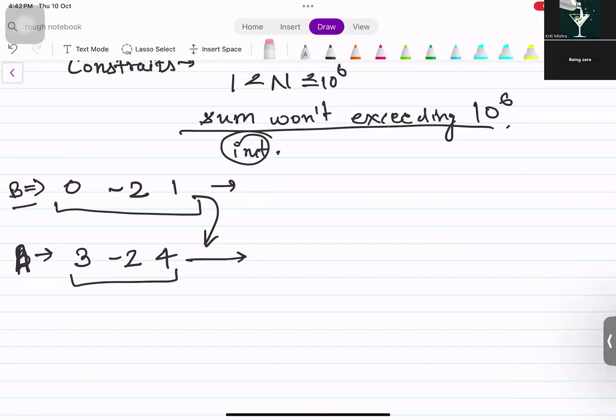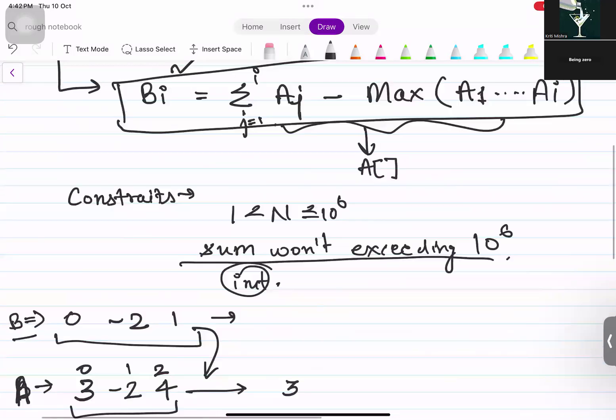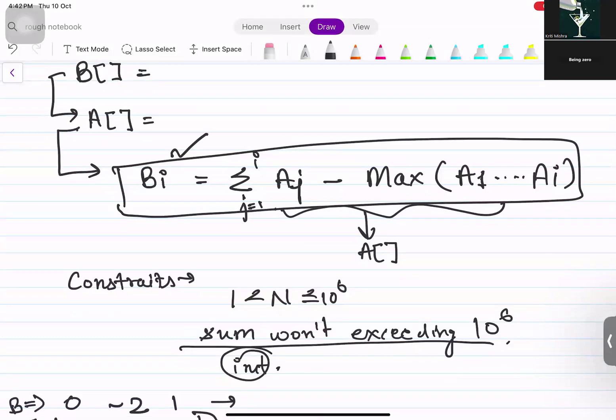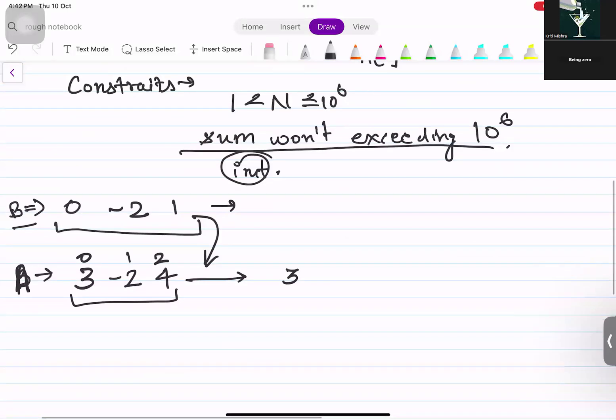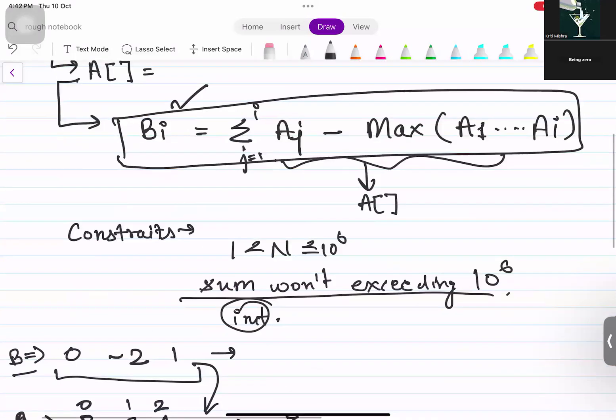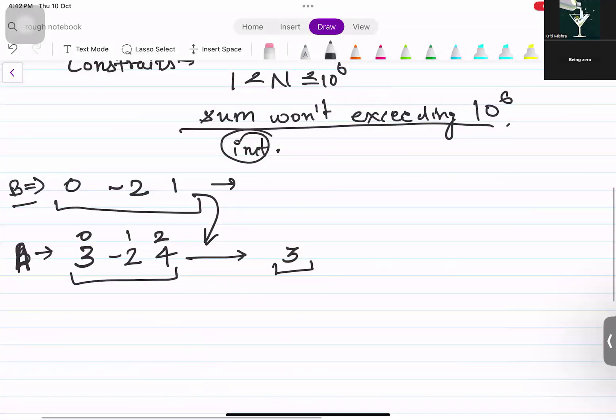Moving to the first index which is 3, they are saying that we need to take the sum of all the elements from 1 till i. So the sum, the current sum would be 3 only since we are on the first element itself. Minus, they are taking the maximum element till i, so it would be again 3 only. The result would be 0.